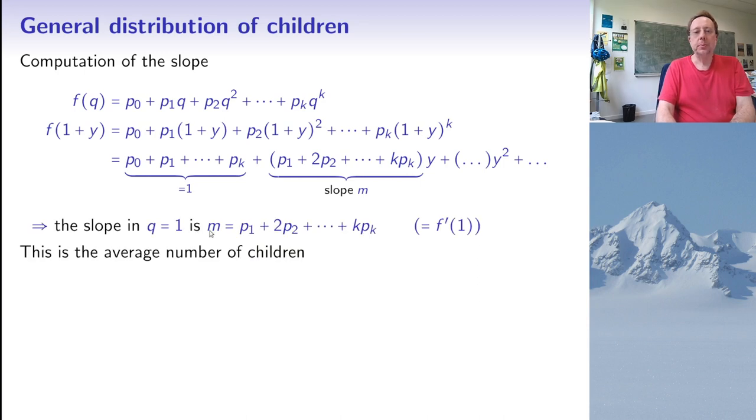Because you see what happens is that F of 1 plus y is this constant 1 plus some number m times y plus something of order y squared, but which has no influence on the slope. So the slope at 1, that is this sum P1 plus 2P2, etc., plus KPk. And it's also the derivative of F at 1. And this is nothing but the average number of children or what we call in probability the expected number of children.